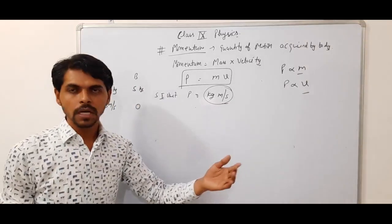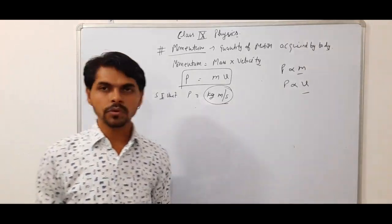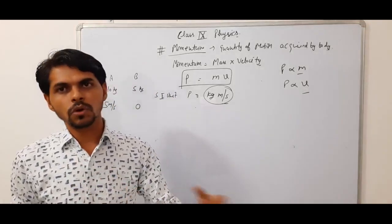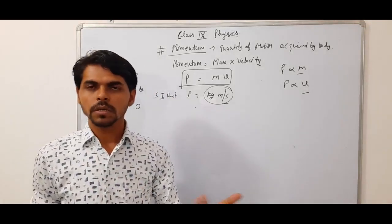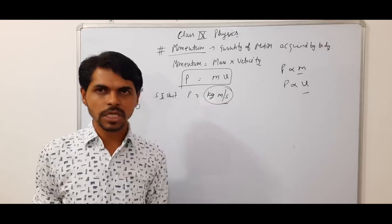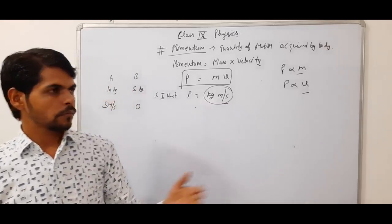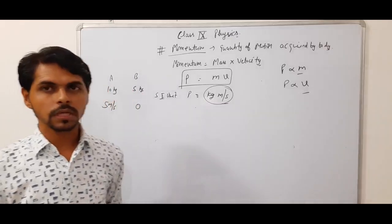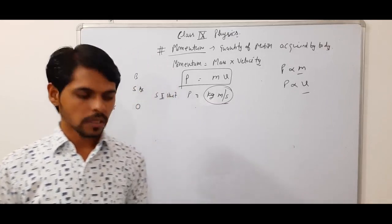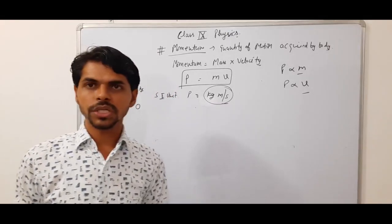If a body is moving and changing its velocity over time, its momentum is also changing. If a body is moving with constant velocity, its momentum will be constant. Momentum bhi saath ke saath change hota rahega.